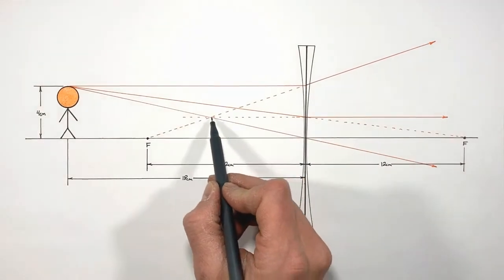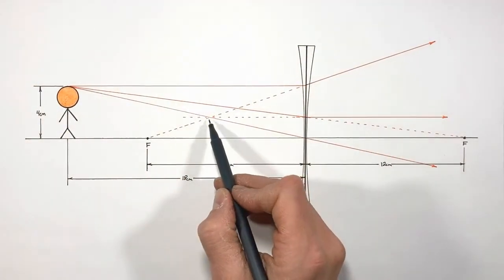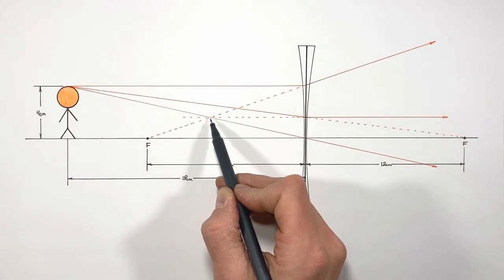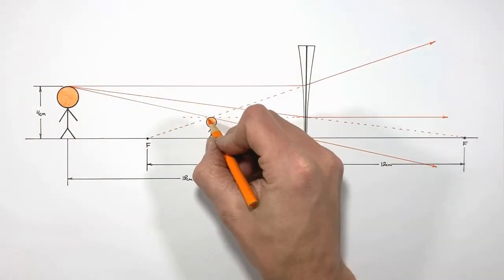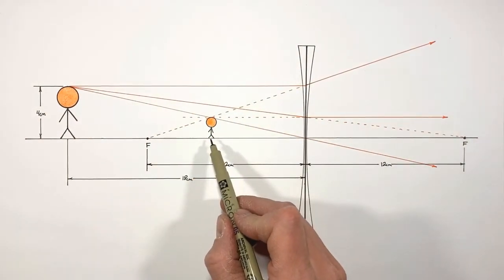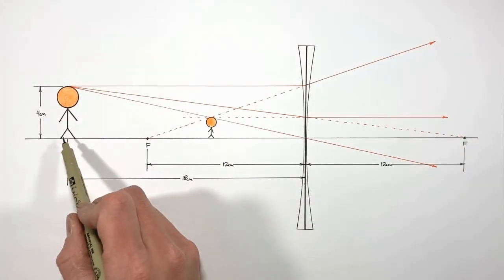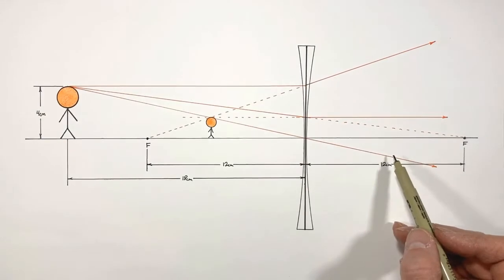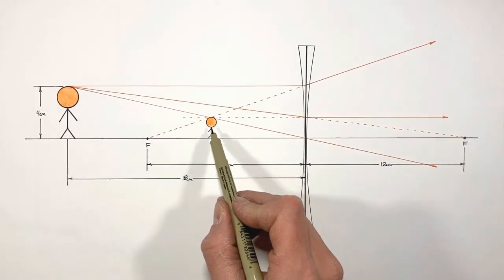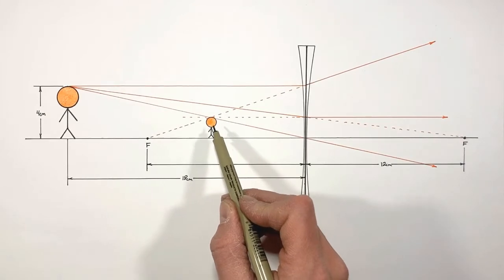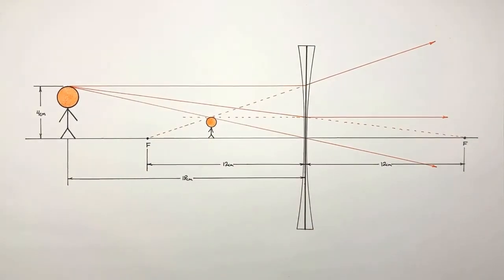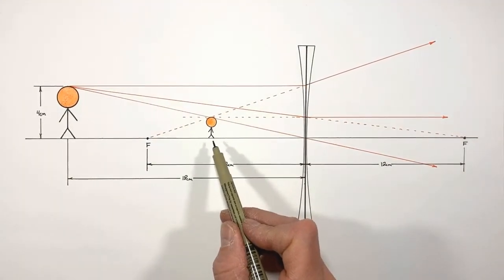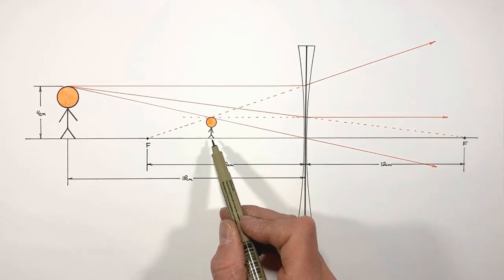The focal ray appears to have originated from somewhere along a dotted line, and the point where all of the refracted rays appear to converge is where our image forms. We see an upright and smaller image form on the same side of the lens as the object. These three refracted rays appear to have all originated at this point, but they don't actually physically cross there, which means this image is virtual.